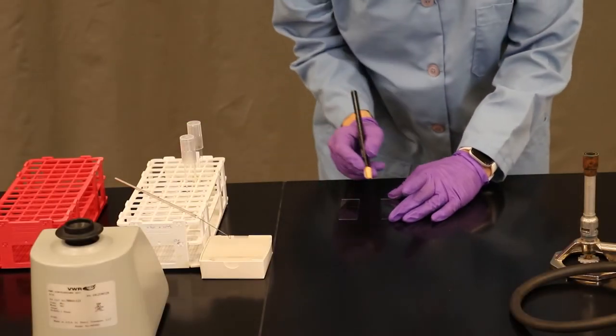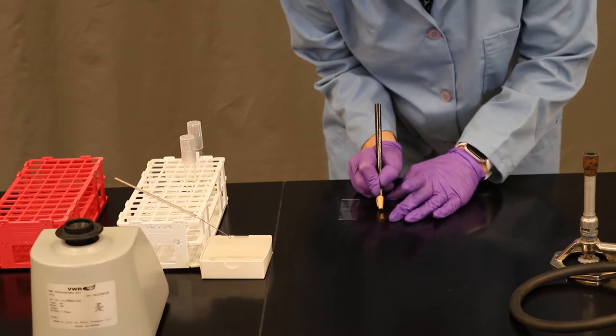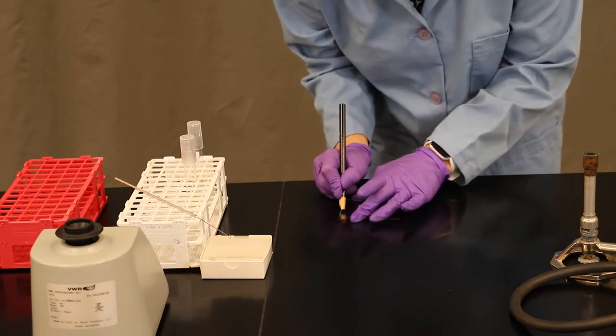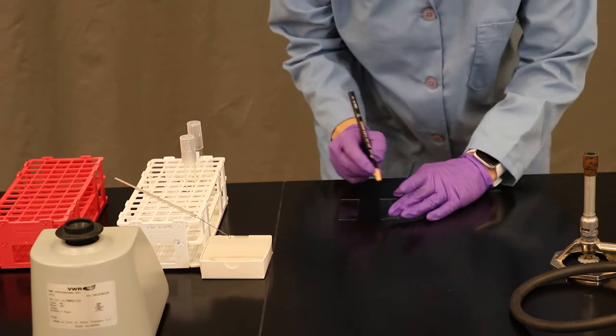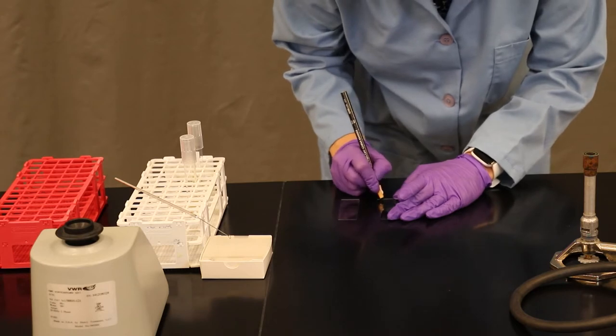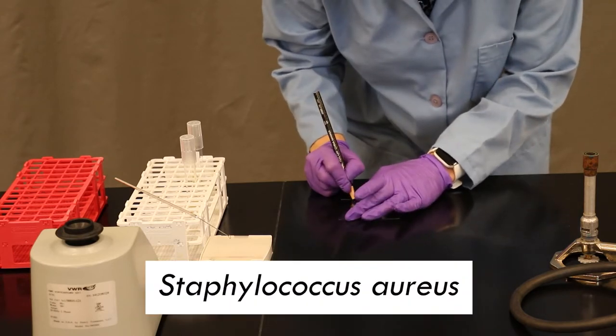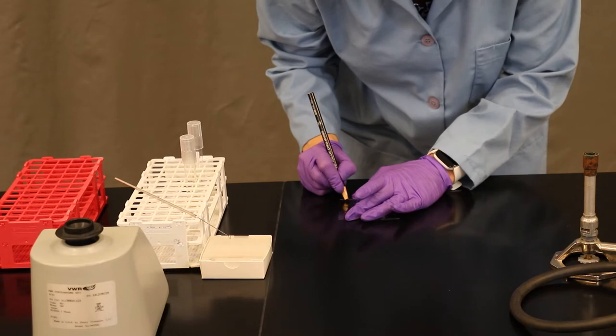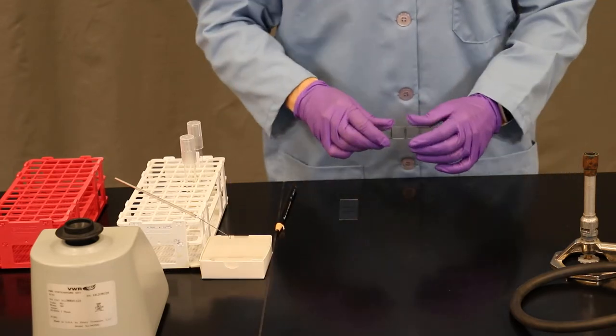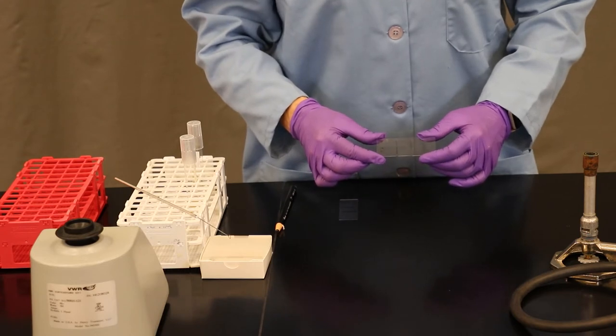Your glass slides have to be marked in terms of the boundary where you anticipate placing your bacterial culture. Either draw two lines or draw a wax circle. You also want to be sure to write the names of the organisms on the glass slide. Staphylococcus aureus, S.A. for short, and on the other slide, Escherichia coli. This is what your final labeled slide should look like.